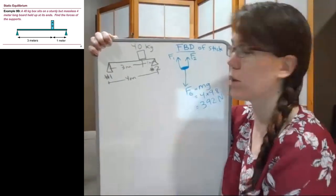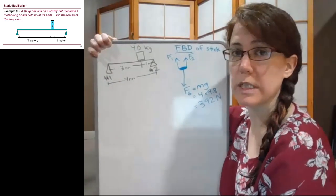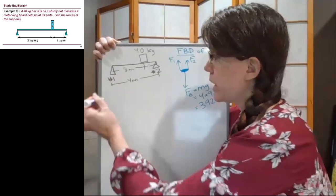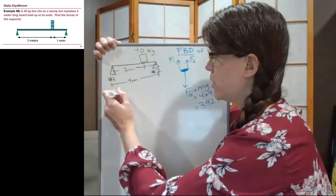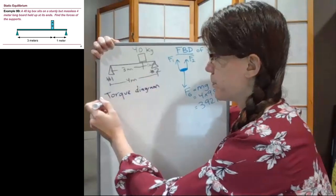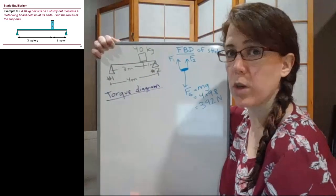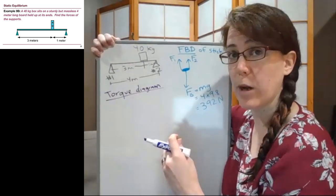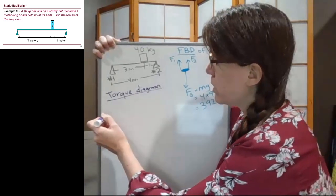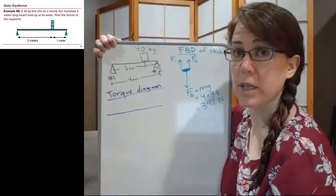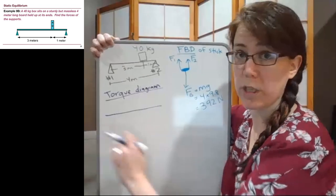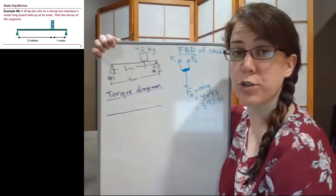We have two unknowns in the forces and will have to use F_net equals zero. The third diagram we're training ourselves to draw in this chapter is the torque diagram. We have steps to follow — it could be useful to write them on a post-it note. Step one is to draw the stick or bar or beam. Step two is to choose an axis.